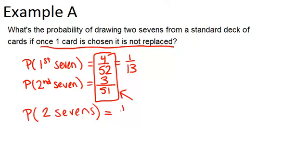And that will just be 1/13, which is 4/52, times 3/51, which ends up being 1 out of 221.